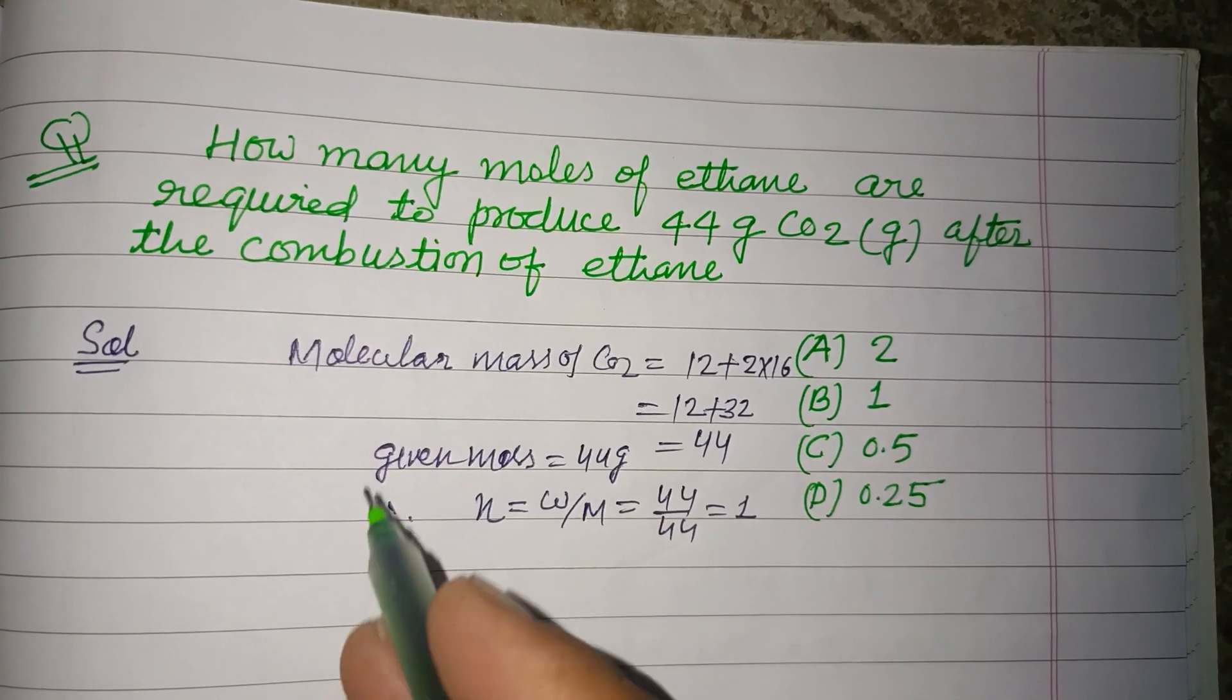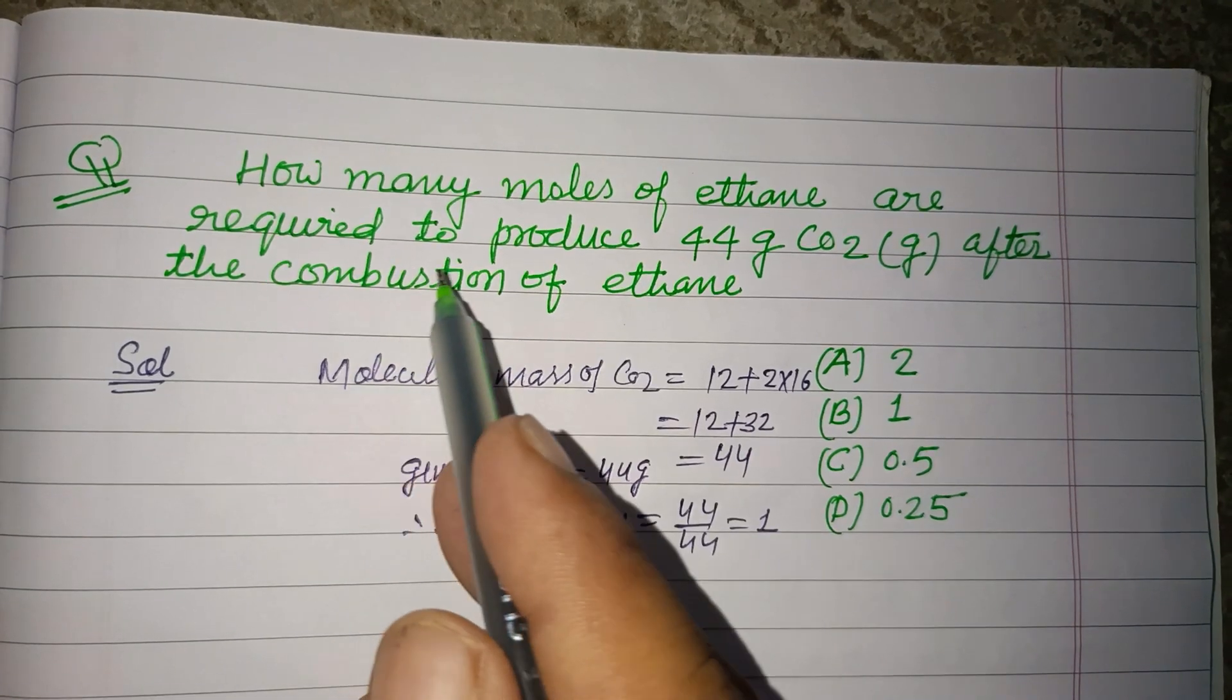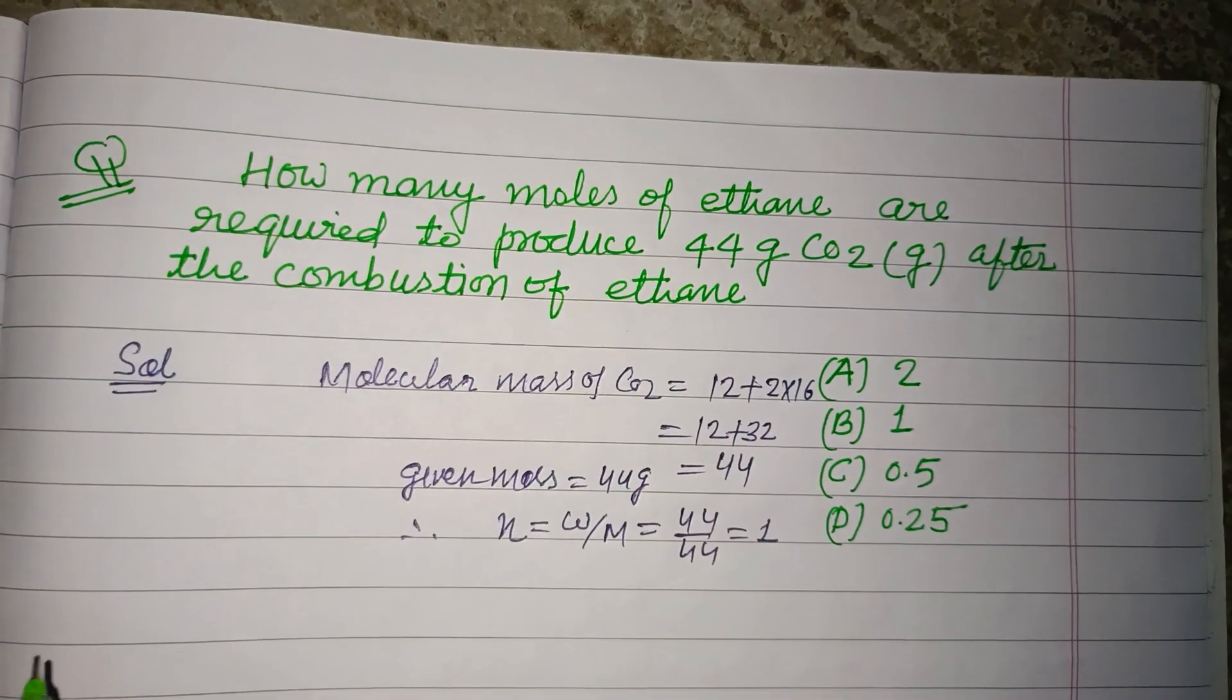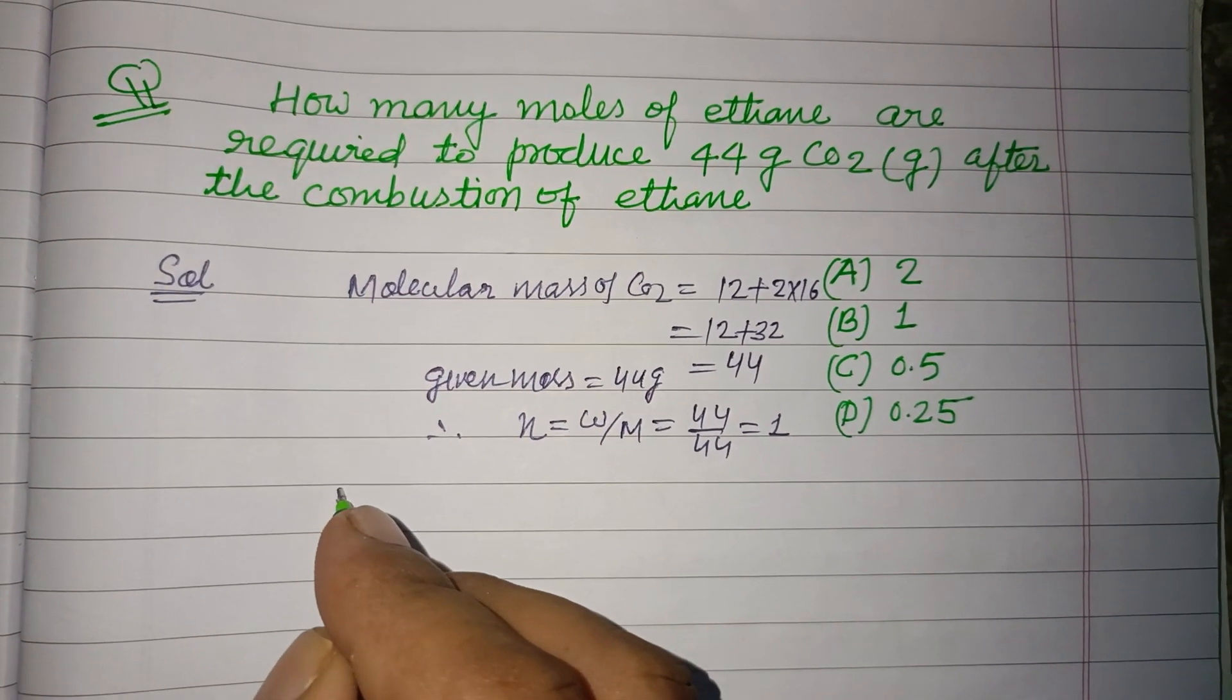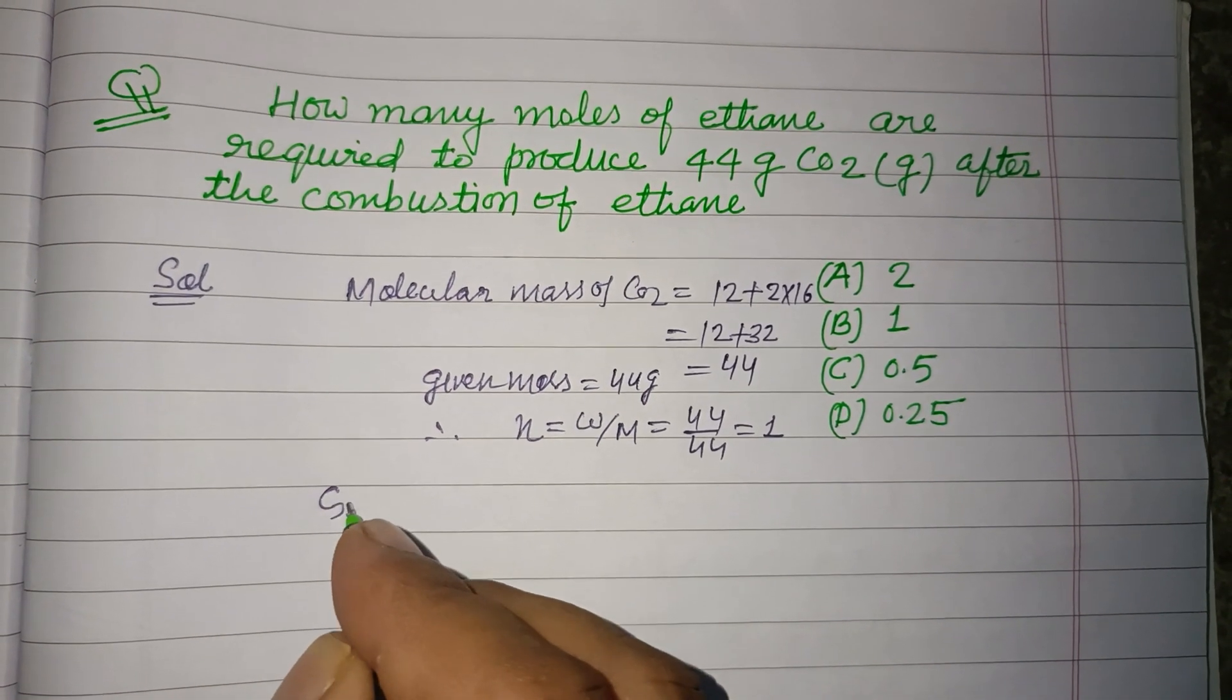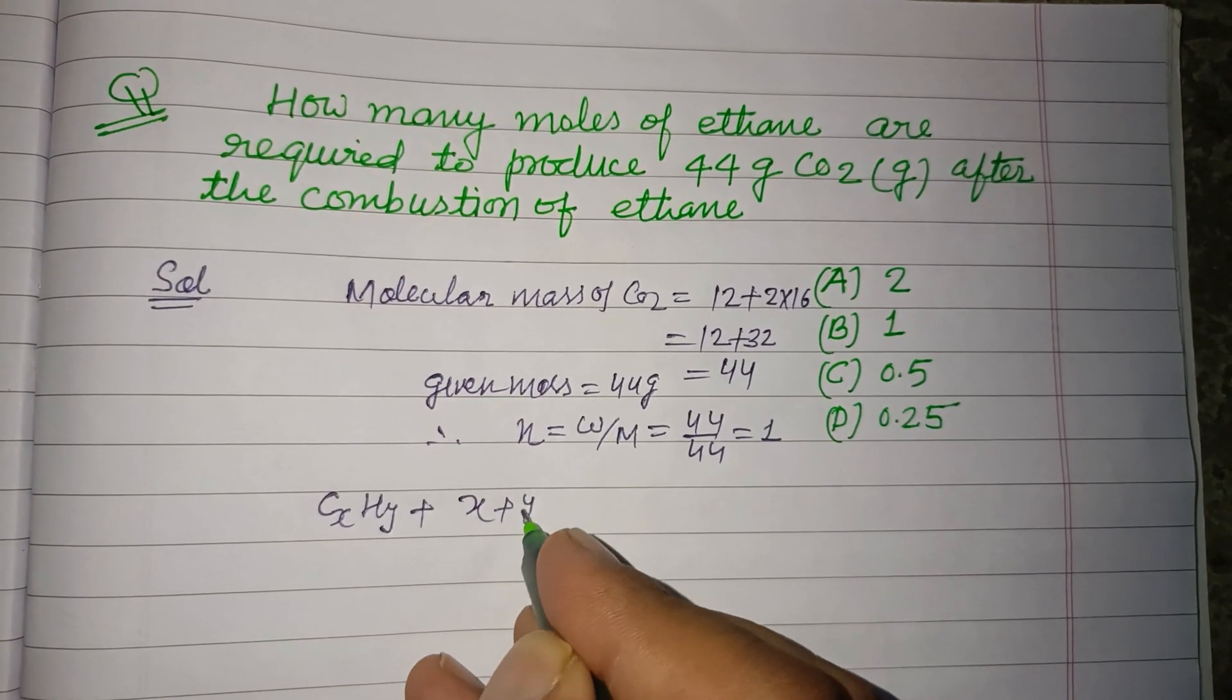So one mole is required. How many moles of ethane are required to produce one mole of carbon dioxide? The general equation of combustion of any hydrocarbon is CxHy plus (x plus y/4) O2 gives x CO2 plus y/2 H2O.